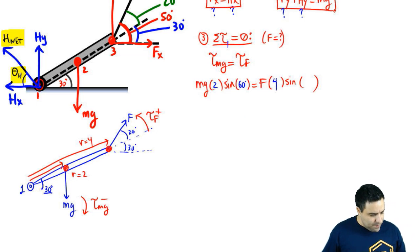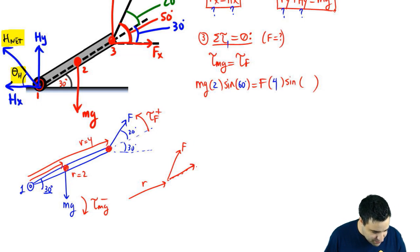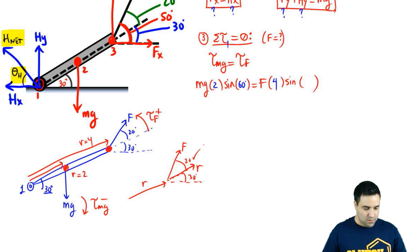What about the angles? The angle for MG, if this is a 30, we're supposed to use this angle right here between the R and the MG. So it's the angle up here. So instead of 30, it's going to be 60. It's the complementary angle. And then here, the angle between R and F is a little bit more complicated. But we can extend the R vector. Here's F. If you extend your R vector right here, it's easy to see that the angle you're supposed to use is not the 30, not the 50, it's the 20. So the angle we're supposed to use here is 20.